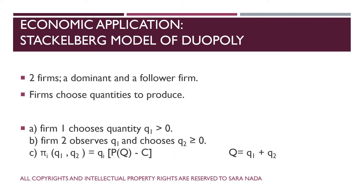We call it a dynamic model of duopoly, which means that the game played by firms in this model is a dynamic game — a sequential game, not a simultaneous game as in the previous economic applications we have studied. In the Stackelberg model of duopoly, firms choose quantities to produce. We will study the simple model of duopoly, where duopoly means there are two firms: a dominant firm and a follower firm.